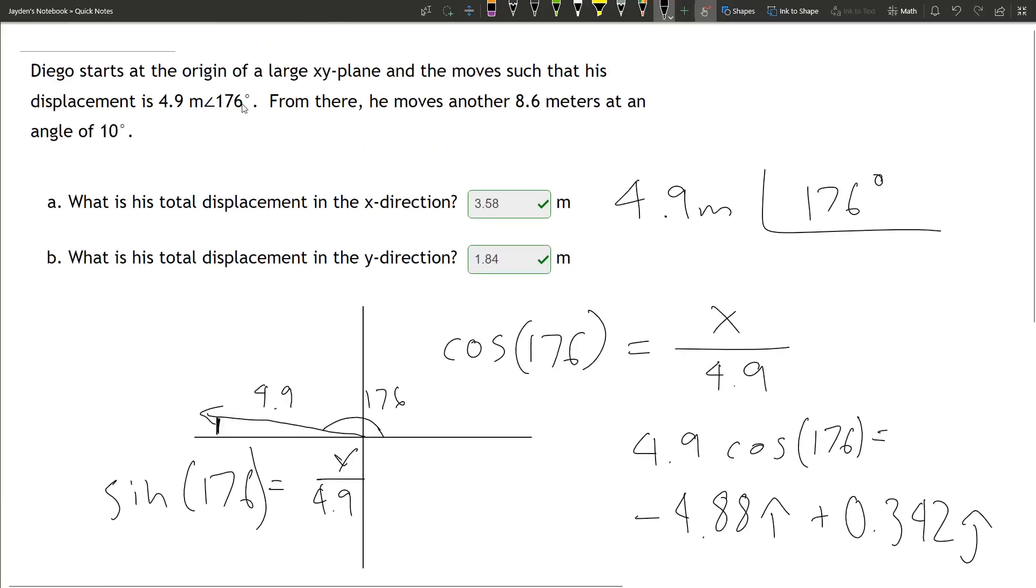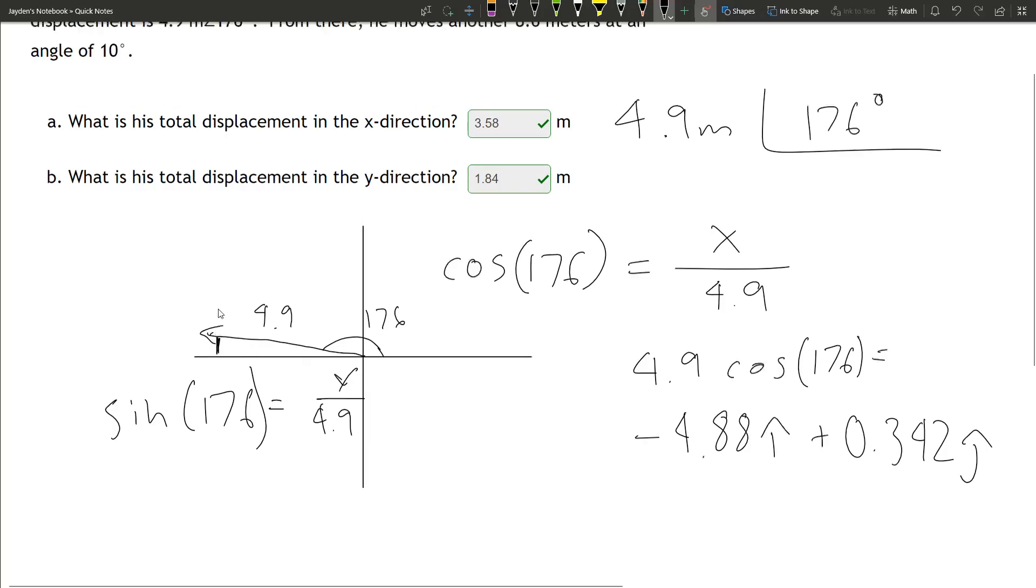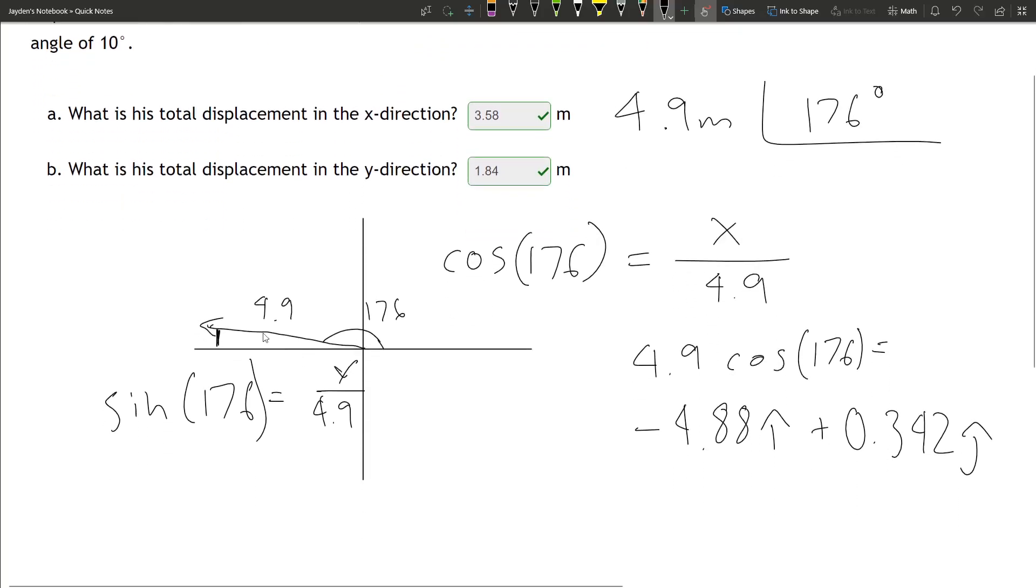That is the direction he was moving. He moves another 8.6 meters at an angle of 10 degrees. From that point, at around an angle of 10 degrees, he's going to move 8.6 meters, which is a lot further.